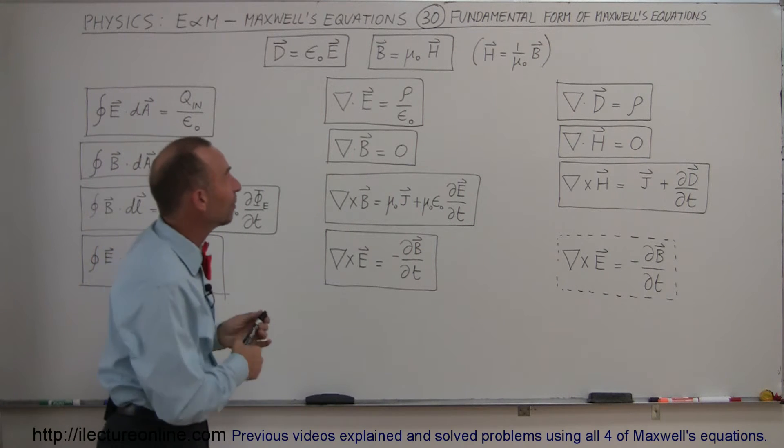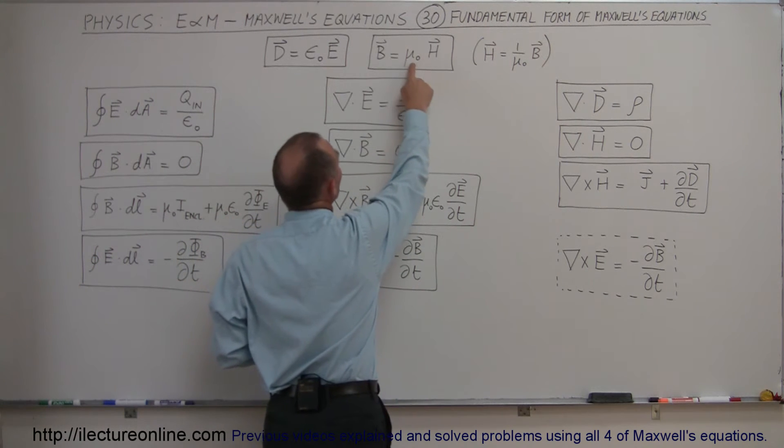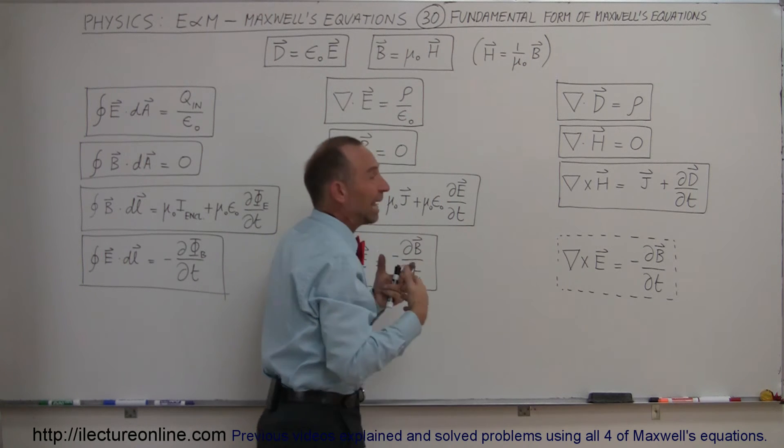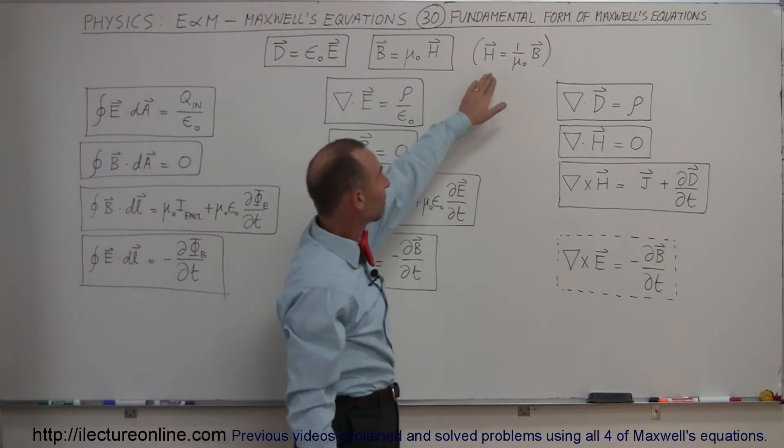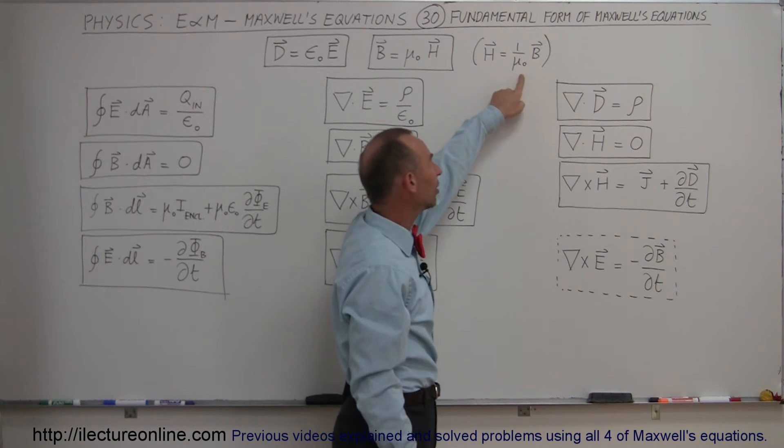So they did the same for the B field. They said we can write the B field as mu sub naught times H. The H field is just another way of representing the B field. It's actually better to represent it like this, because then you can see that H is simply the B field divided by mu sub naught.